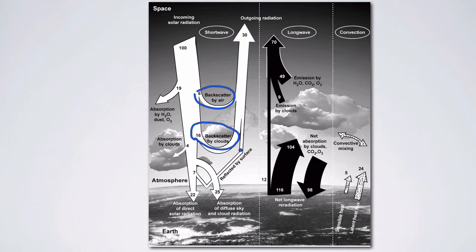There's also reflection by the surface, absorption by water vapor, dust, ozone, and clouds — that's 23 units — and then absorption of direct solar radiation or diffuse sky radiation. We'll talk about the difference between direct and diffuse in a little bit. Those are some of the fates of shortwave radiation entering the atmosphere and then reaching the surface of the Earth.